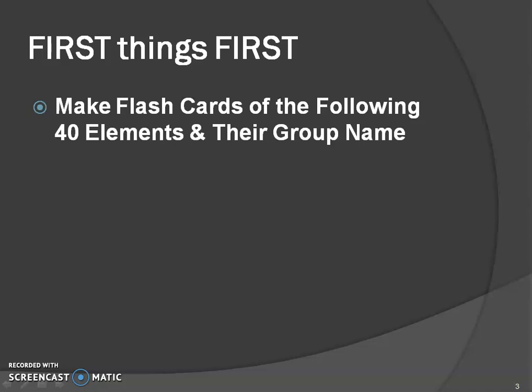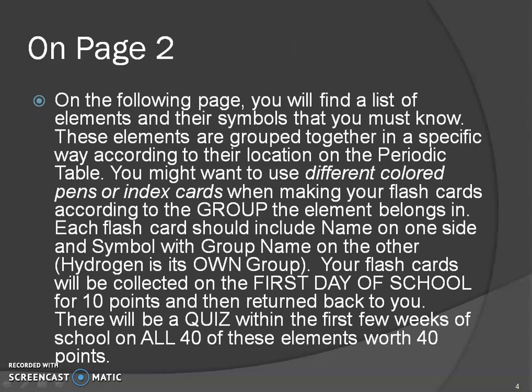I'll be telling you how you're going to do things on the periodic table, and you can always go back and rewind if you need a refresher. On the following page of your packet you're going to find a list of elements and their symbols — these are the ones you must know. They're grouped together in a specific way based on their location on the periodic table. I suggest using different colored pens or index cards when making your flashcards according to the group that element belongs to. Each flashcard should include the name on one side and the symbol with the group name on the other.